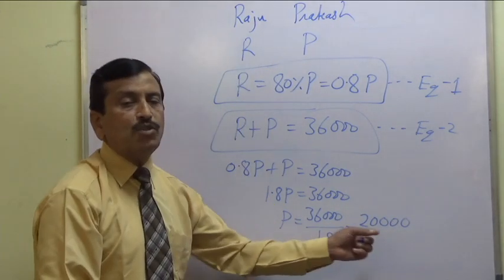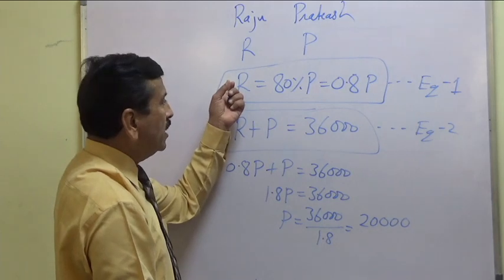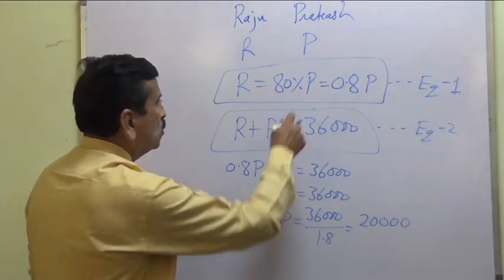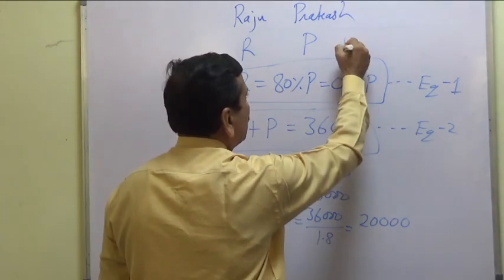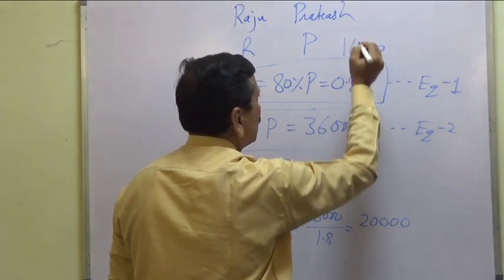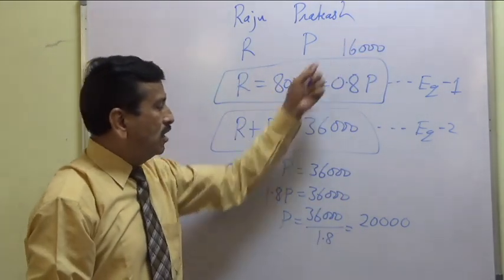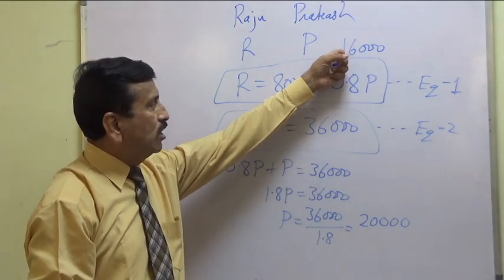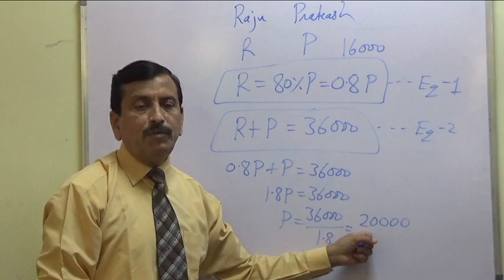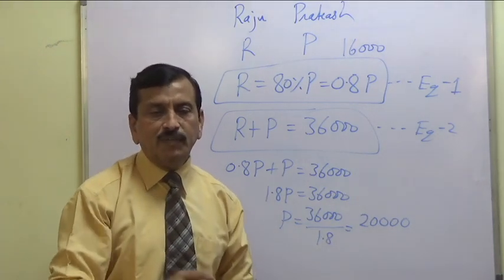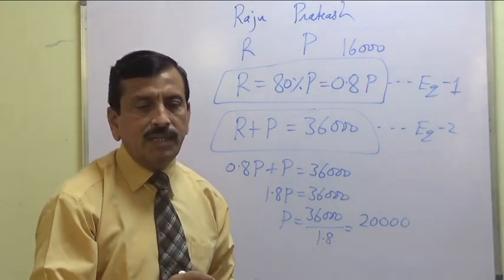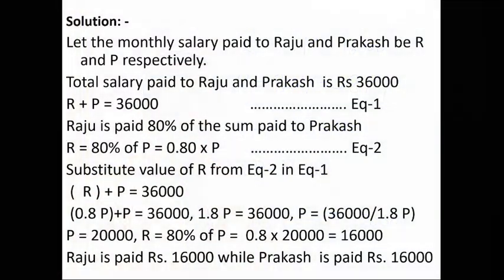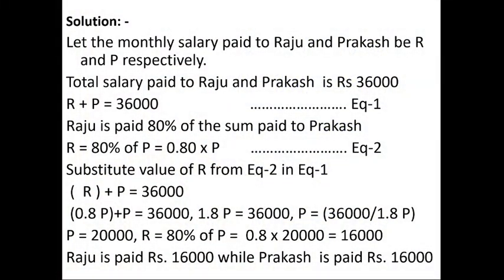So Prakash's salary is 20,000 and Raju's salary is 80 percent of that, which is 16,000. Raju gets 16,000, Prakash gets 20,000. 16,000 plus 20,000 is 36,000, and 16,000 is 80 percent of 20,000 — both conditions are satisfied. Check the answer in the solution. You can go through it and now we move to the next problem.